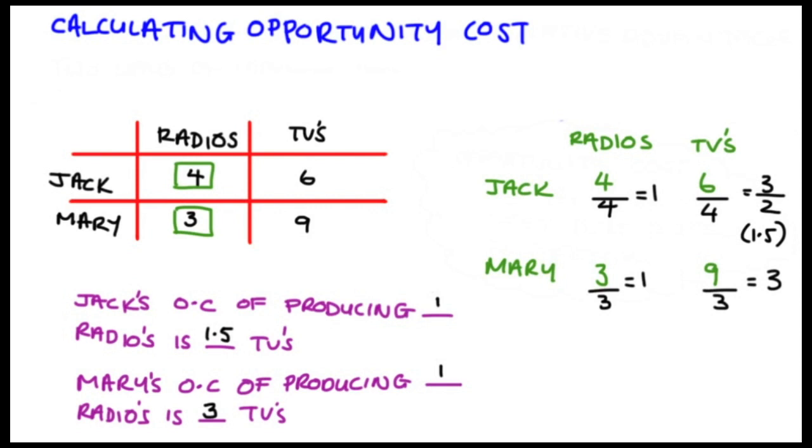And that's it. All I'm doing is rewriting the table, but just normalizing the figures in the table down to one. In this case I've done radios. You can flip it around and do TVs, in which case you'd be working it the other way. So for instance, Jack's opportunity cost of producing one TV—you would have to divide both sides by six, because six divided by six is one, and then you would get four divided by six, et cetera.